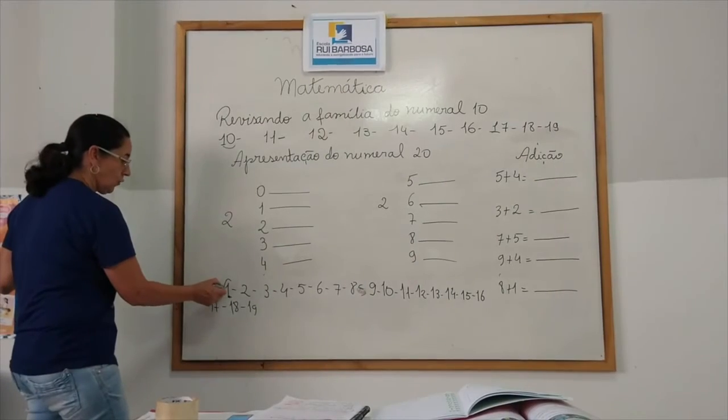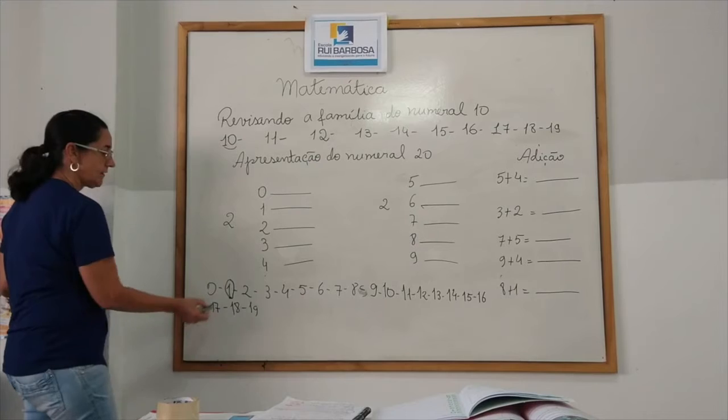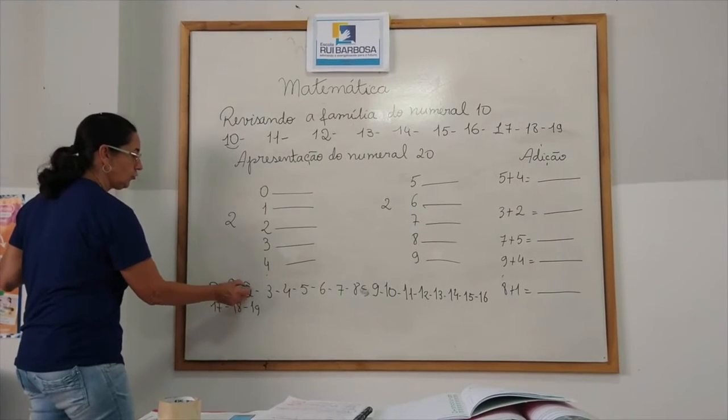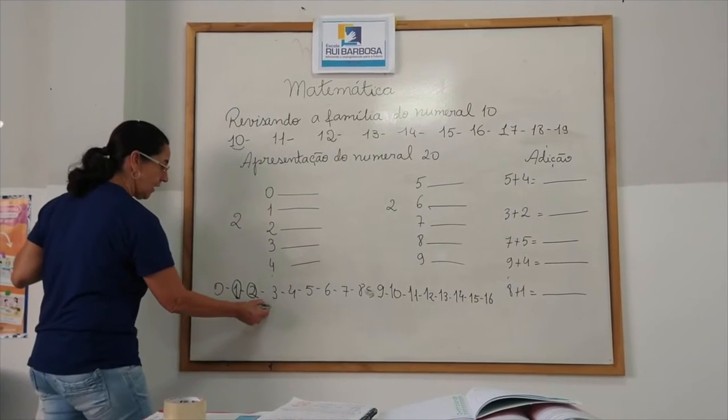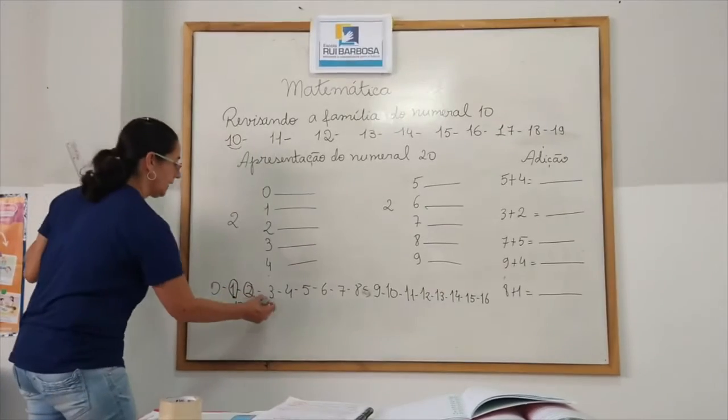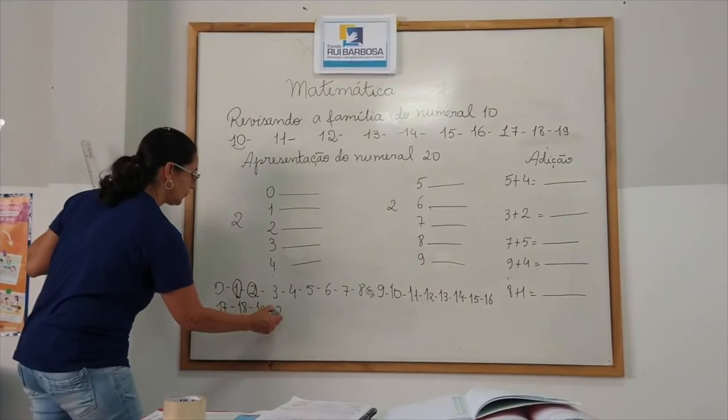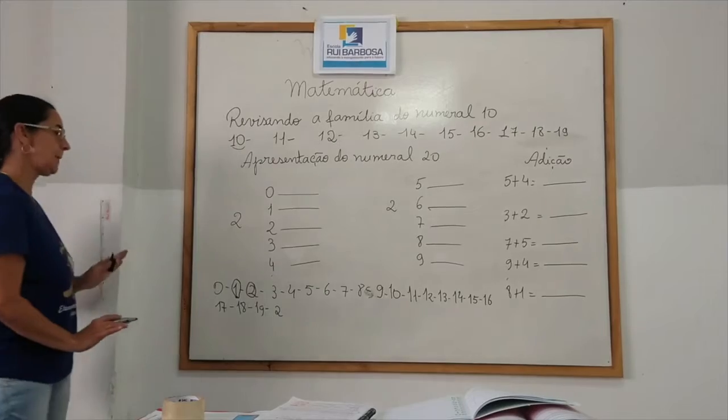Depois do 1, aqui nesse sequência das unidades, vem o numeral 2. Então, depois do 19, eu vou ter o 2 com o chefe. Então, olha, eu vou botar aqui o 2. Deixa ele aqui. Ok?